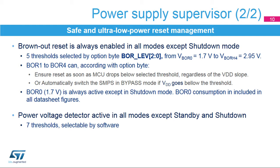STM32WB devices embed an ultra-low-power brownout reset which is always enabled in all power modes except shutdown mode. The BOR ensures reset generation as soon as the MCU drops below the selected threshold, regardless of the VDD slope. Five thresholds from 1.7 to 2.95 volts are selected by OptionByte programmed in flash memory. A power voltage detector can generate an interrupt when VDD crosses the selected threshold. The PVD can be enabled in all modes except standby and shutdown modes. Seven thresholds can be selected by software, and additionally an external pin can be used to compare voltages.